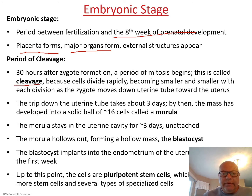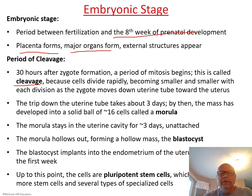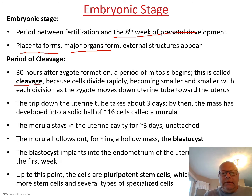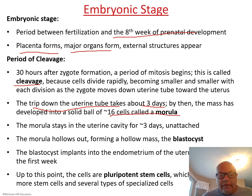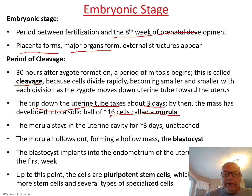During cleavage, the zygote starts moving down the uterine tube. The trip down the tube takes about three days. After several divisions it is called the morula, which is around 16 cells. The morula stays in the uterine cavity for three days, unattached to the uterus.